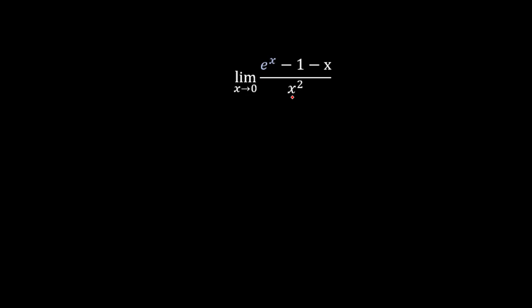Now the first thing we probably want to try here is just to go ahead and plug in zero for x. This is the most straightforward approach. And if we do that, we find that we get e to the zero minus one minus zero over zero squared. Of course, e to the zero is just one, so on the top we got one minus one over zero, which is zero over zero, which unfortunately is undefined.